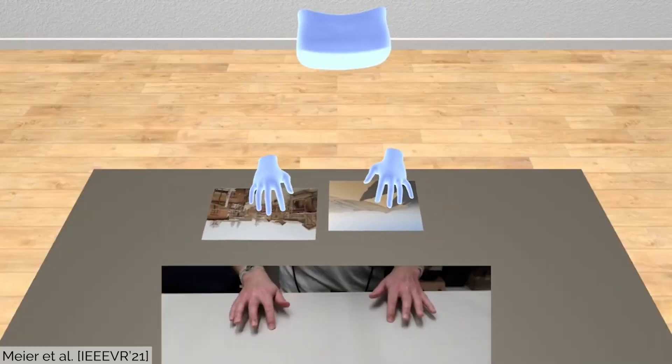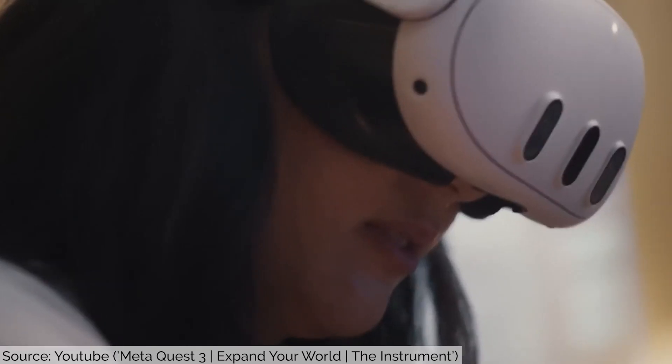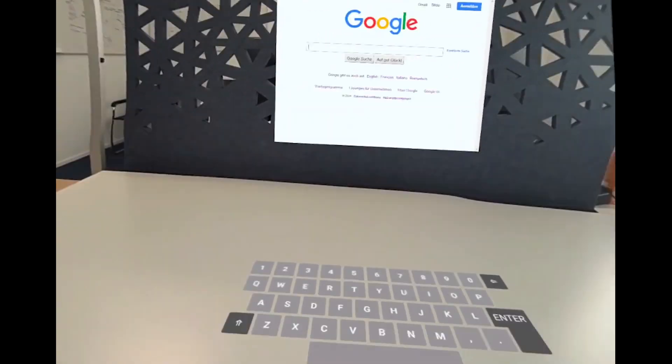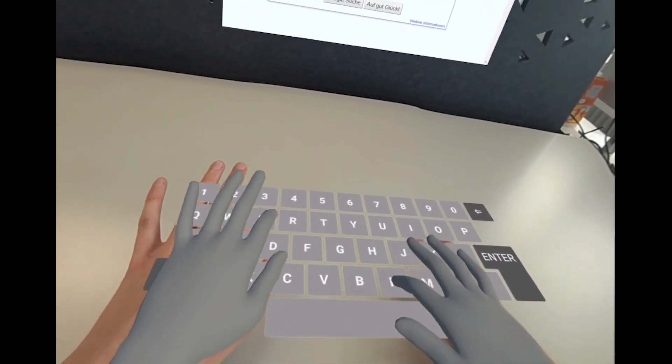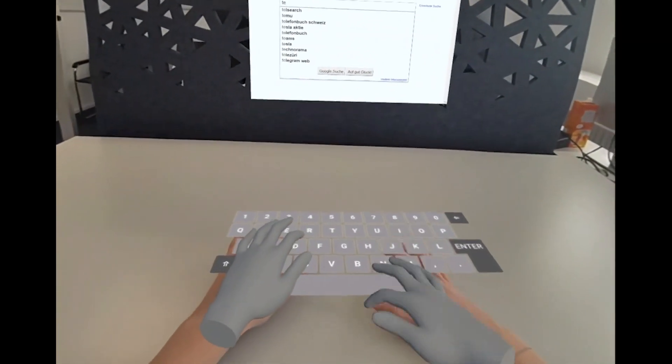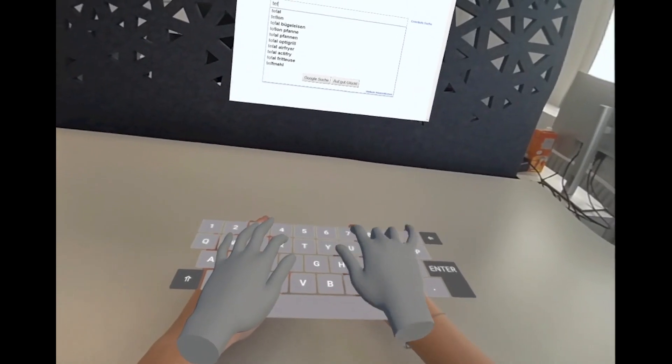While passive surfaces offer numerous benefits for interaction in mixed reality, reliably detecting touch input solely from head-mounted cameras has been a long-standing challenge. Camera specifics, hand self-occlusion, and rapid movements of both head and fingers introduce considerable uncertainty about the exact location of touch events.